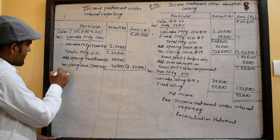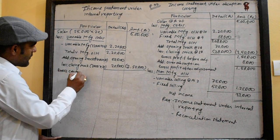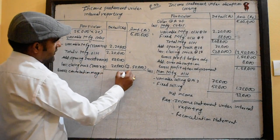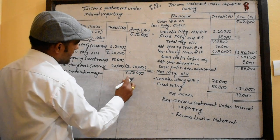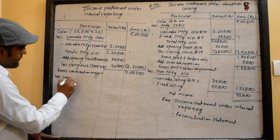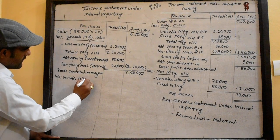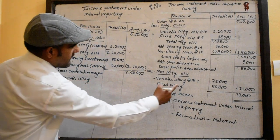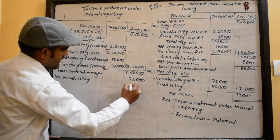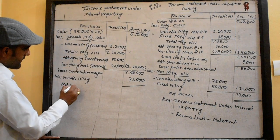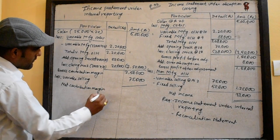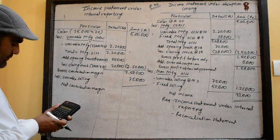This is the gross contribution margin. Gross contribution margin is 250,000. As a total, less variable selling and distribution — variable selling, there are example three, there's 75,000. This is a total net contribution margin.